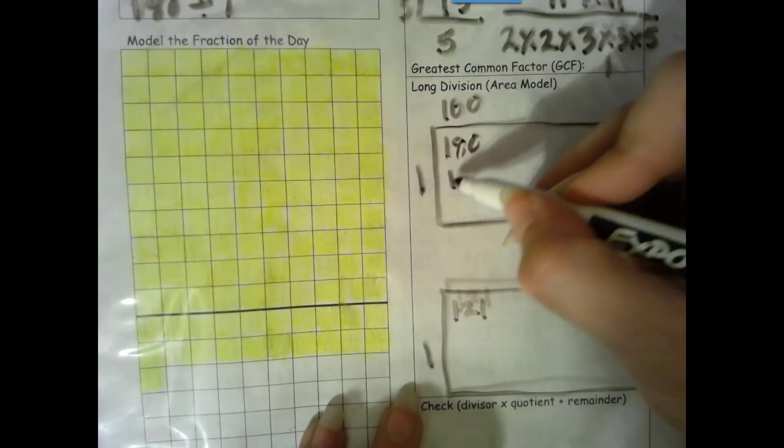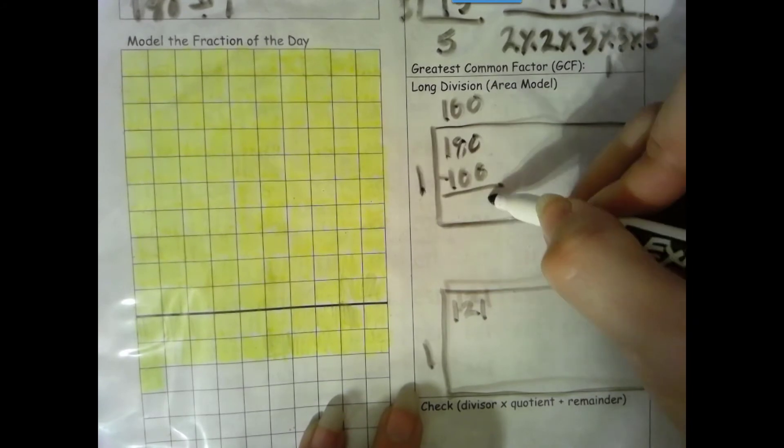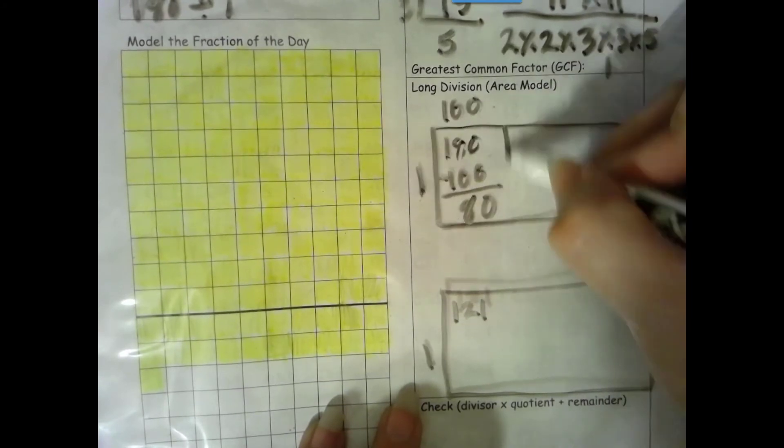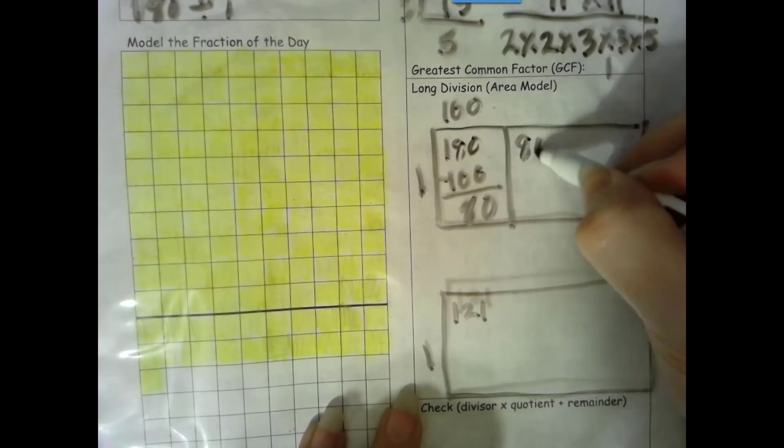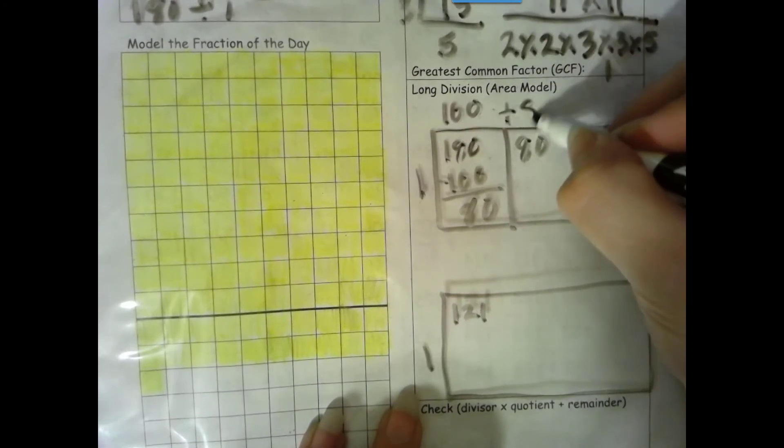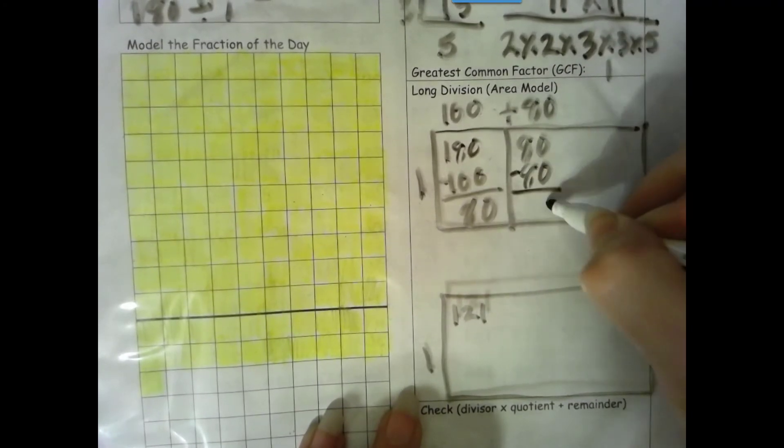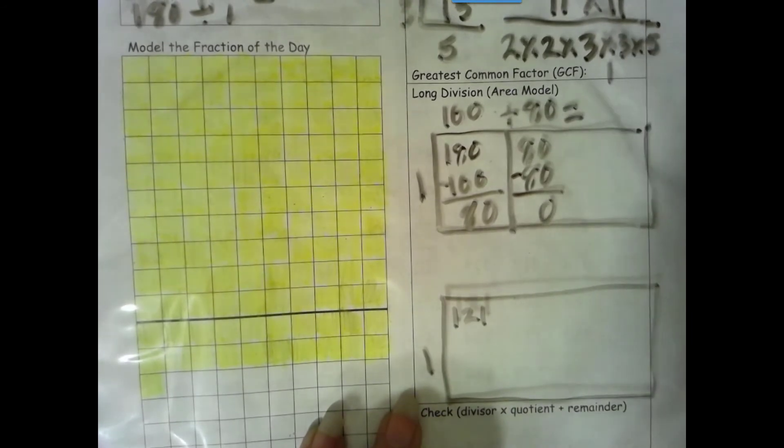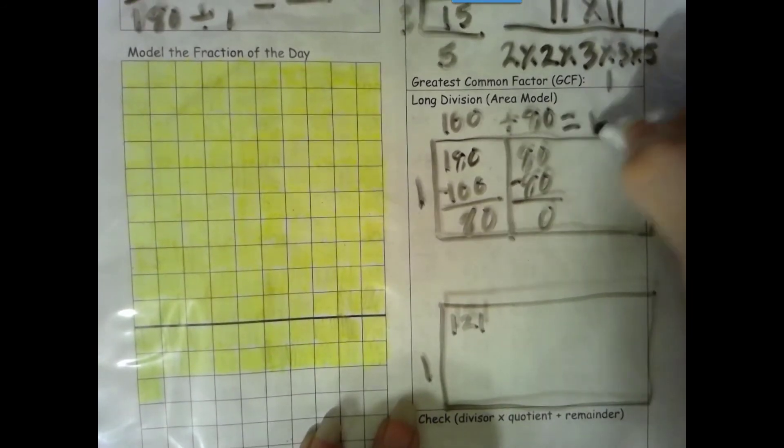100 times 1 is 100. The number is the same. Zero is the game. We're on top. No need to stop. Bring the 80 up. 80 times 1 is 80. The number is the same. Zero is the game. Add these together. 100 plus 80 is 180.